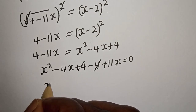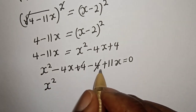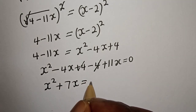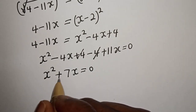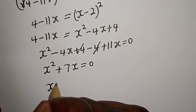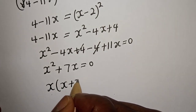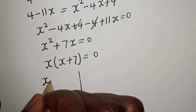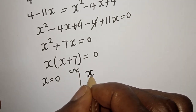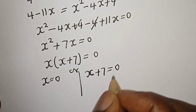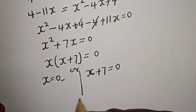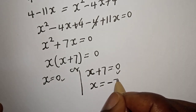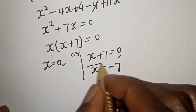This simplifies to x squared minus 4x plus 11x, which is x squared plus 7x equals 0. x is common, so we factor: x(x + 7) = 0. There are two cases: the first case is x equals 0, or x plus 7 equals 0, which gives x equals minus 7.